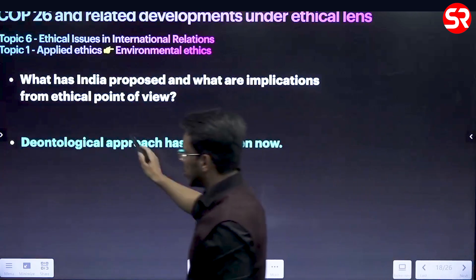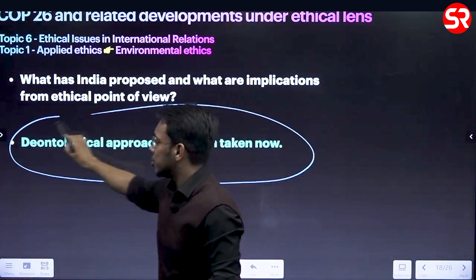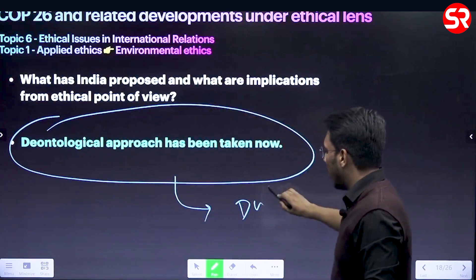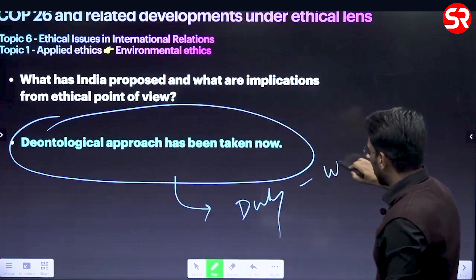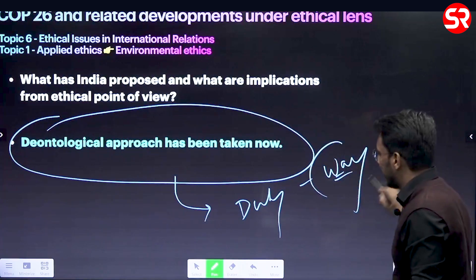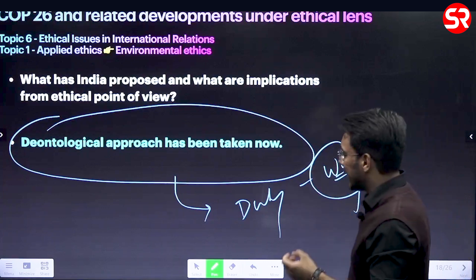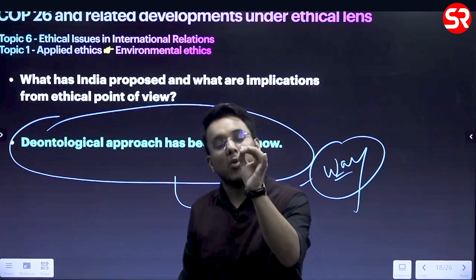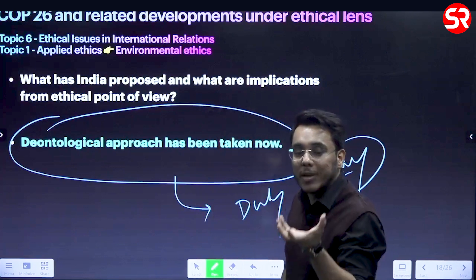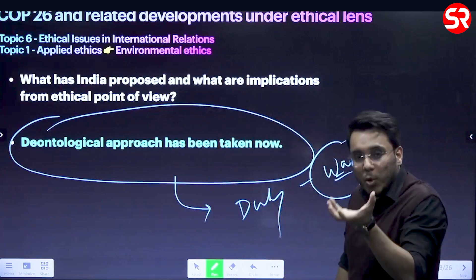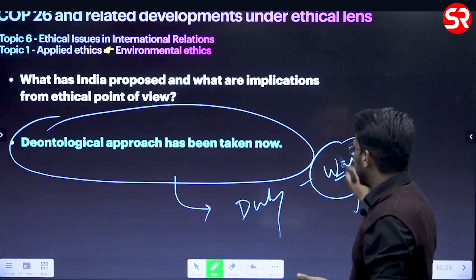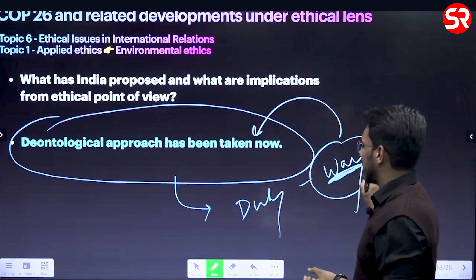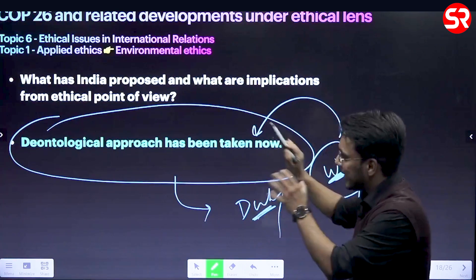The implications of India's Panchamrit: number one, India has switched to a deontological approach - focusing more on duty and on the way of doing things, not just outcomes. According to a Climate Tracker report, India was already overachieving its INDC targets. But now India has shifted its viewpoint, embracing a more responsible and enhanced sense of duty reflecting the deontological approach.